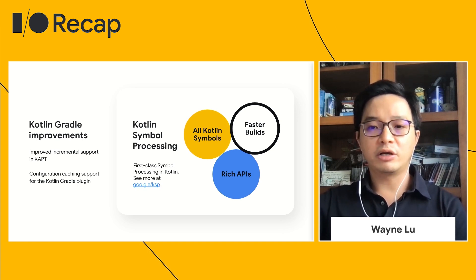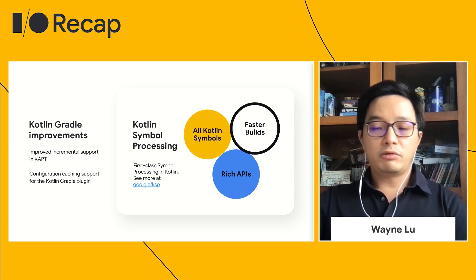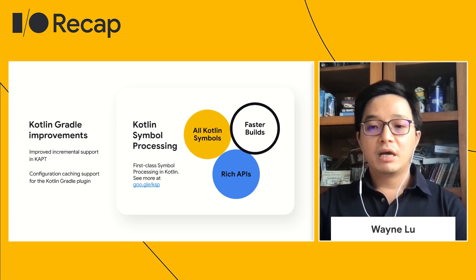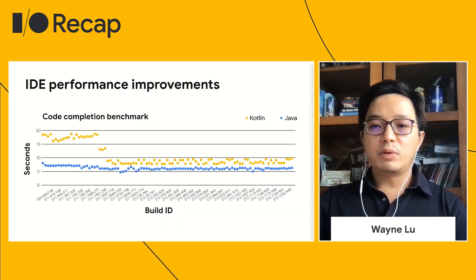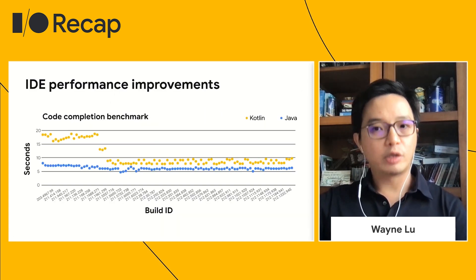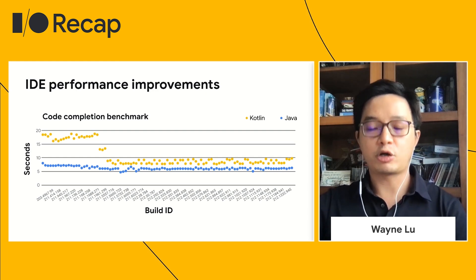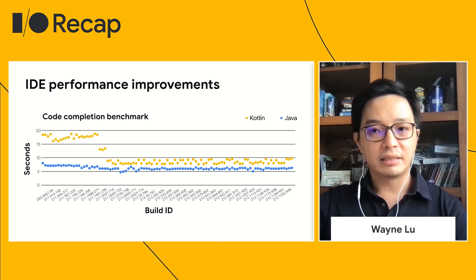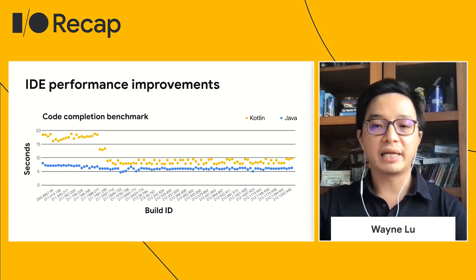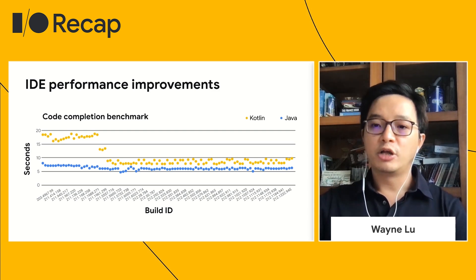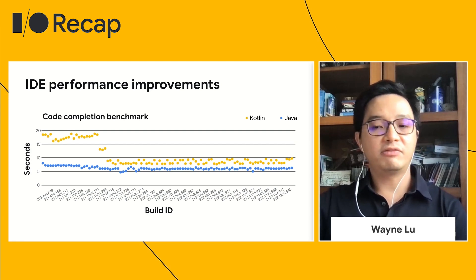KSP directly integrates with the Kotlin compiler, providing access to all your Kotlin symbols, supporting incremental multi-round processing, and it's ready for multi-platform. The Jetpack Room library has KSP support in beta. Our team has been working closely with JetBrains to address IDE performance issues. In Kotlin 1.5, we are seeing up to 20x faster auto-import suggestions and up to two times faster code completion with complex dependency graphs. Make sure to upgrade to the latest version of Android Studio and the Kotlin IDE plugin to benefit from these improvements.